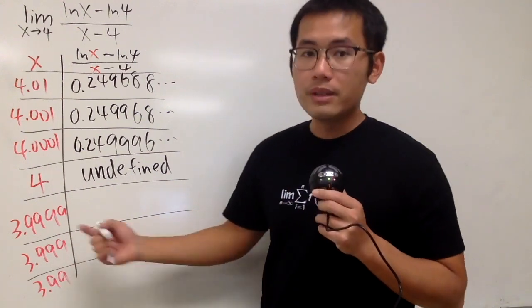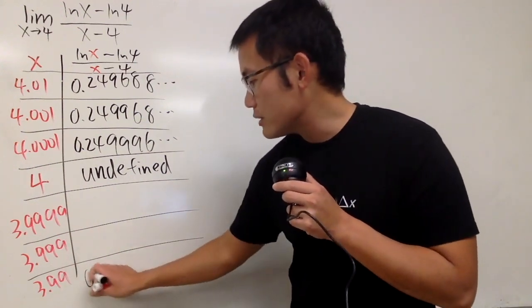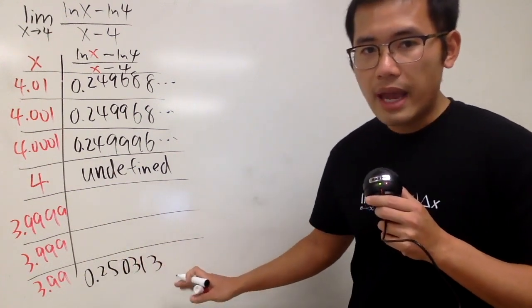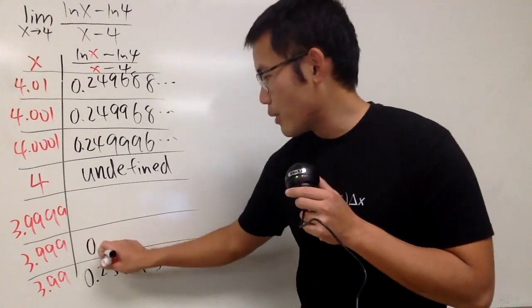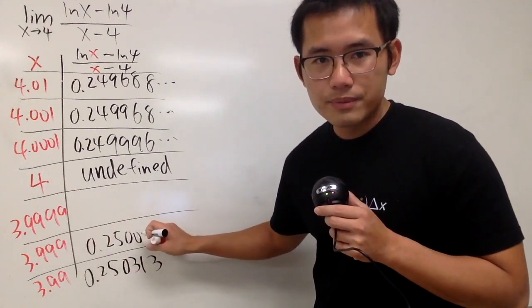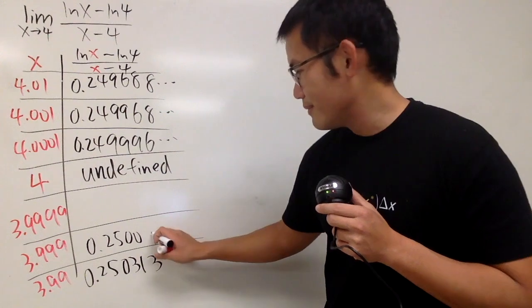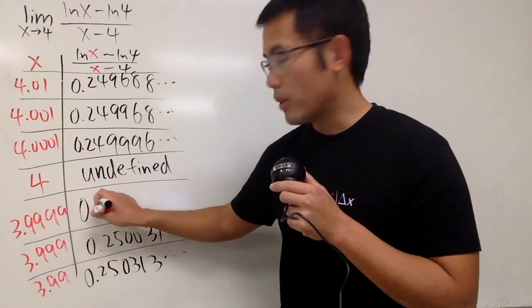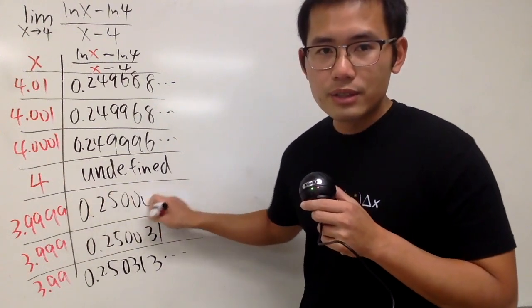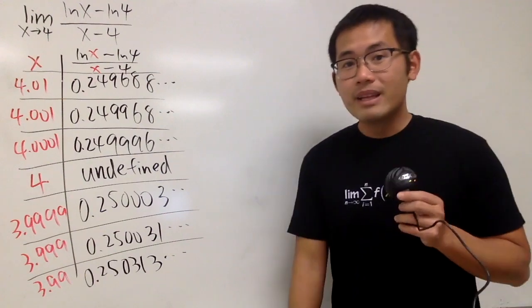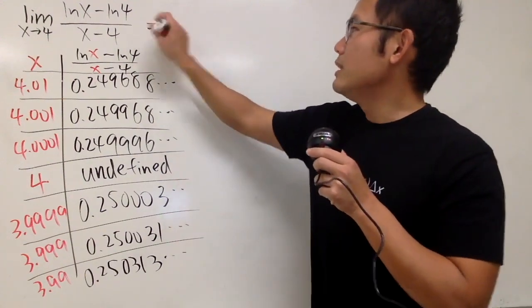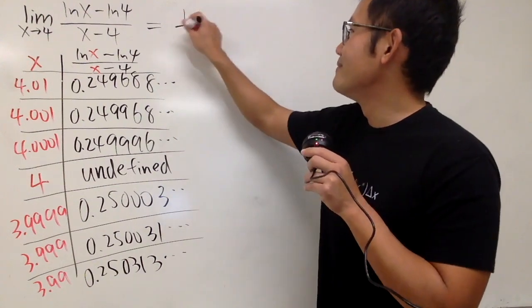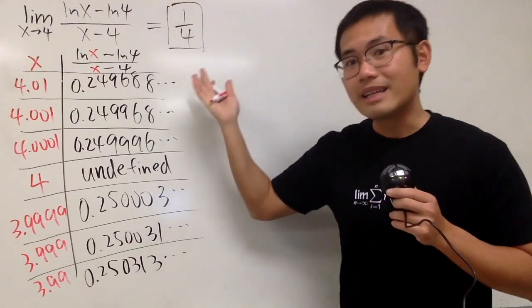And if you go from the other direction, let's start from this right here, we actually have 0.250313. And then we have 0.250031. And then lastly, here we have 0.250003. Therefore, you can see that the answer to this right here, it will be 0.25, or 1 over 4. So that's it.